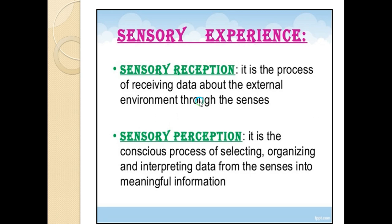We receive data about the external environment through sense organs — this is called sensory reception. Sensory perception, on the other hand, is the conscious process of selecting, organizing, and interpreting data from the senses into meaningful information. Whenever the senses are active, we perceive a lot of information.